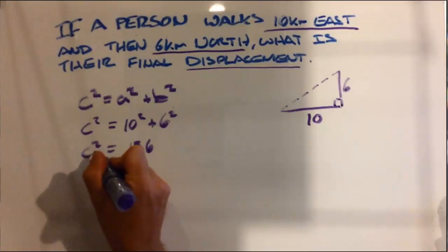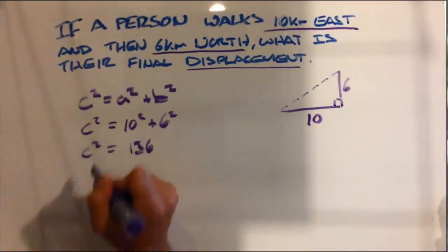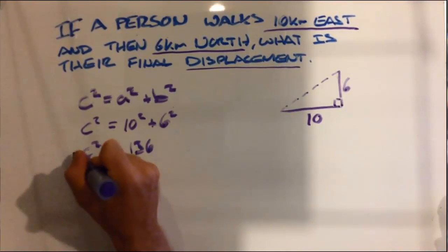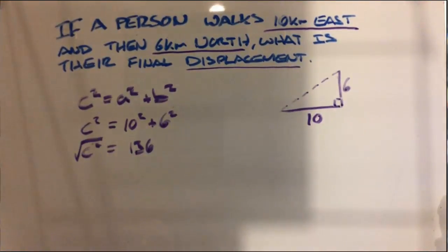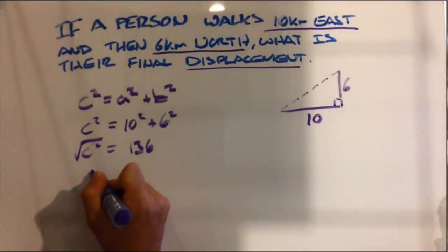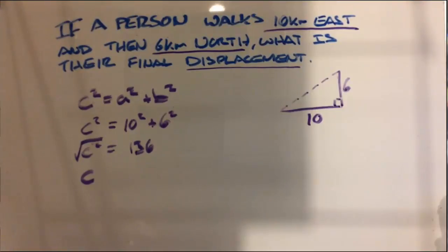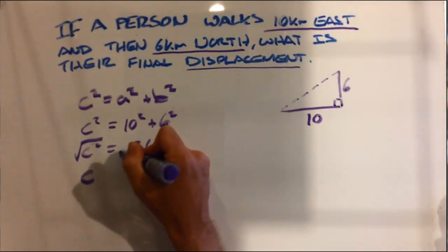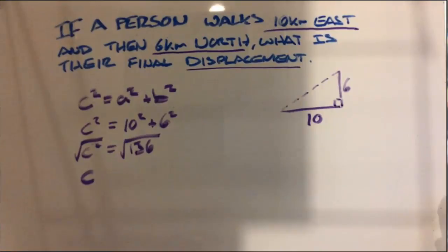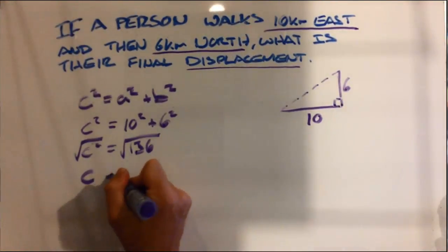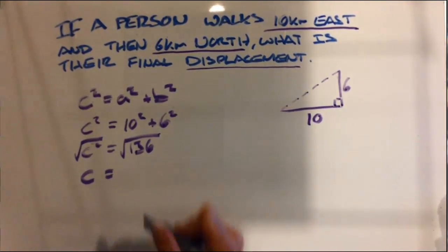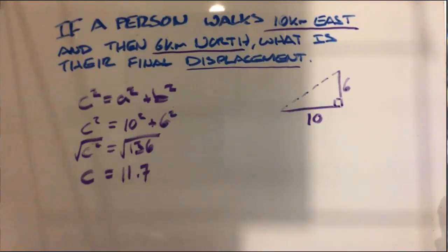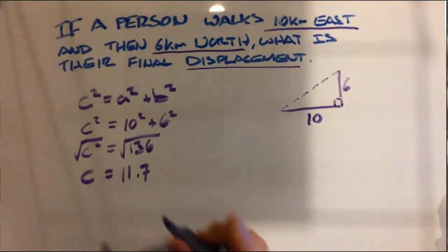Remember we just want c on its own, so to get rid of that squared we are going to square root both sides, giving us c on its own. Whatever we do to one side we need to do to the other, and so we land up with 11.7 kilometers.